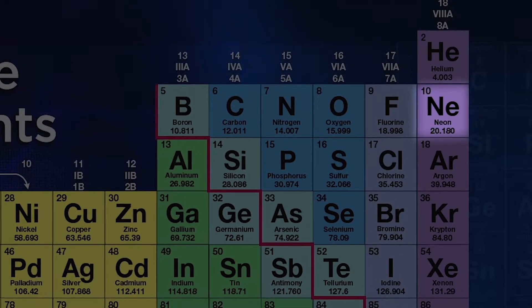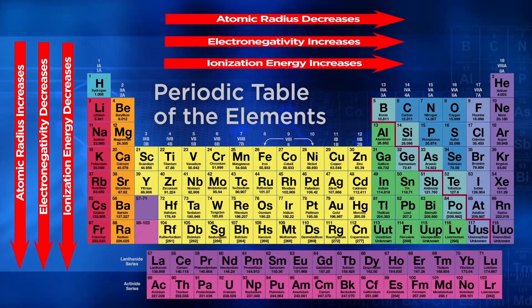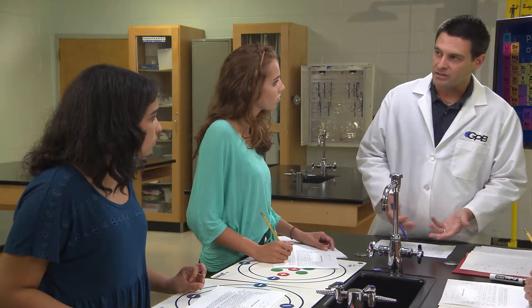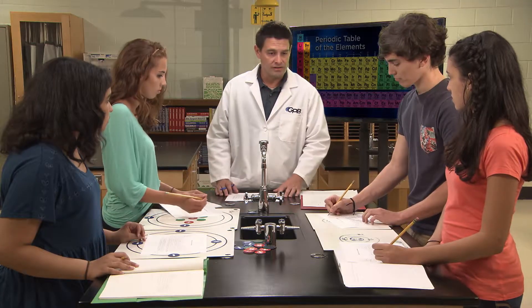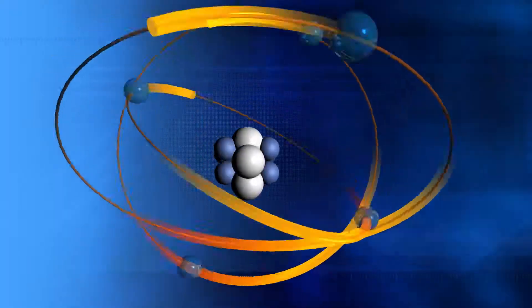Do you notice any patterns? Ionization energy and electronegativity always trend in the same direction, and atomic radius always moves in the opposite direction. Very good observation. So we're finished exploring periodic trends, but you'll want to write these trends down so you can refer to them later when we cover additional units — they are a very important predictor of chemical reactivity. By now you have a good understanding of periodic trends. If not, feel free to review this segment until you're comfortable with the information. If you're ready, join us for our next video in the Unit 3 playlist about electron configuration. I'll see you there.